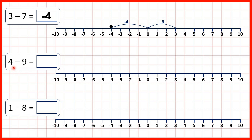Now we have four minus nine. So on our number line, we can start at four. And then count back one, two, three, four, five, six, seven, eight, nine. So our answer is minus five.